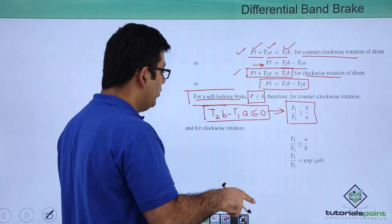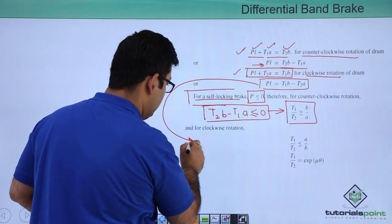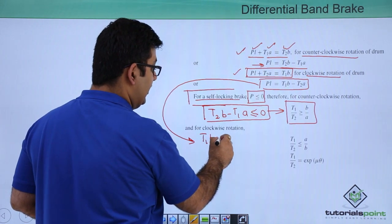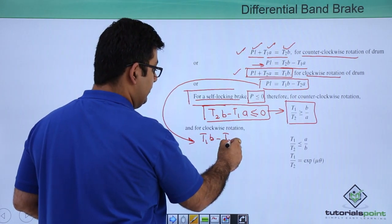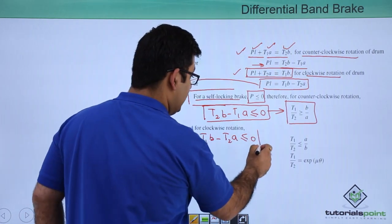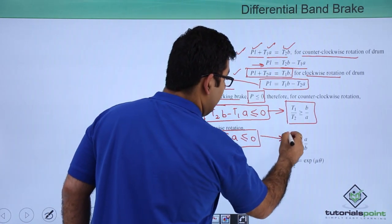For the case of clockwise rotation, we write T1*B - T2*A. This should be negative or zero. This relation would result in this condition.